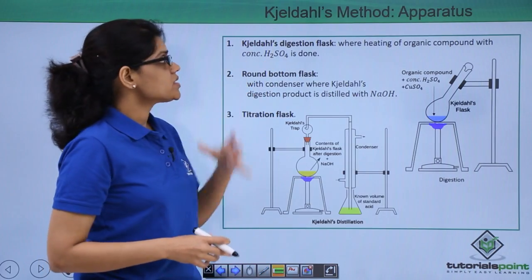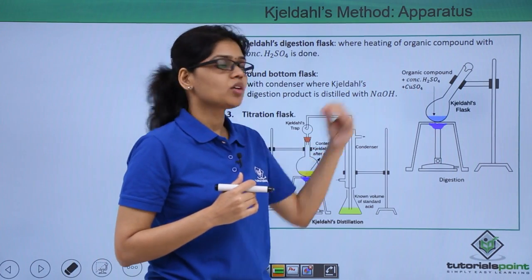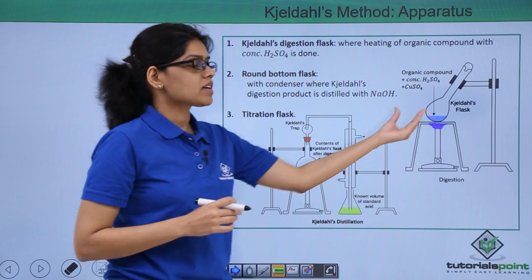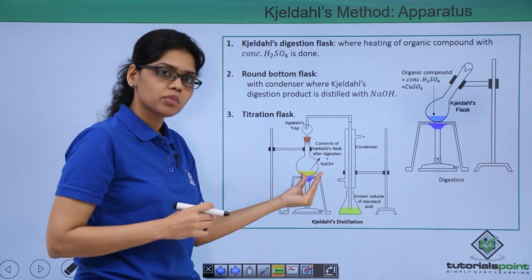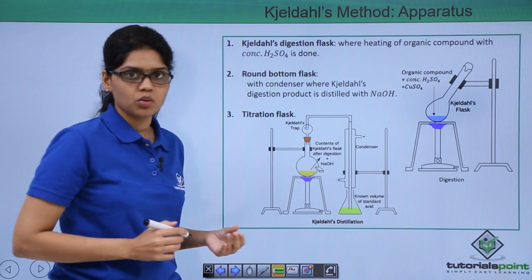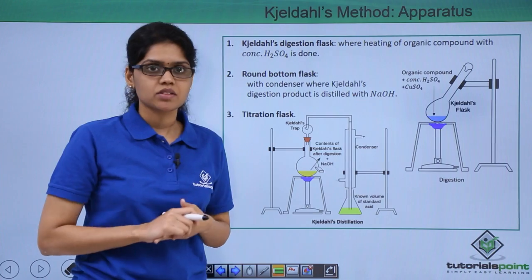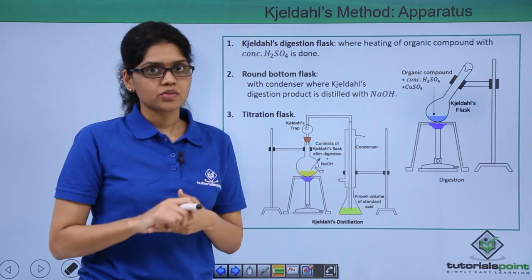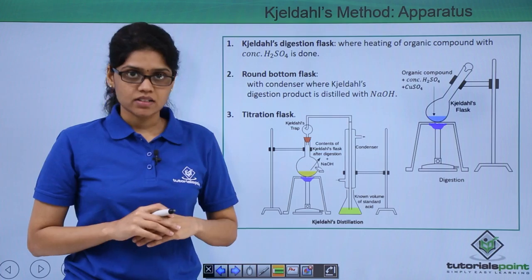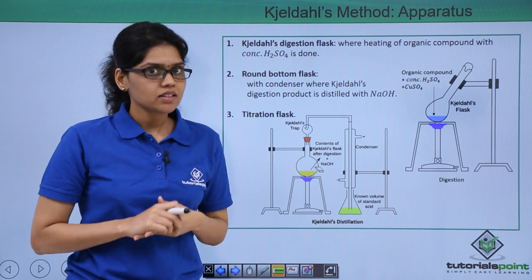The first one is Kjeldahl's digestion flask where we carry out the first step, digesting our organic compound with H2SO4. In the second step, we transfer the content from the Kjeldahl's flask to a round bottom flask where we react ammonium sulphate with NaOH. The last component is the titration flask where we carry out the titration with the unused H2SO4. These are the three major components of Kjeldahl's method: digestion flask, round bottom flask and titration flask.